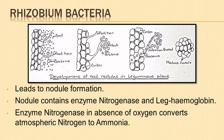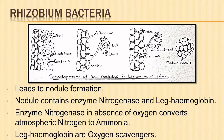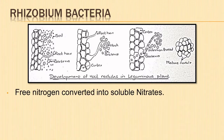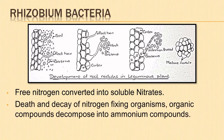The nodule contains the enzyme nitrogenase and leghemoglobin. The enzyme nitrogenase catalyzes the conversion of atmospheric nitrogen to ammonia. For this reaction to occur, the enzyme requires anaerobic conditions. To protect these enzymes, the nodule contains leghemoglobin, which is an oxygen scavenger. The free nitrogen may also be converted into soluble nitrates, some of which pass into the soil and are absorbed by plants to make proteins, while the rest are used by bacteria to synthesize their own proteins. When the nitrogen-fixing organisms die and decay, the organic compounds are decomposed into ammonium compounds.